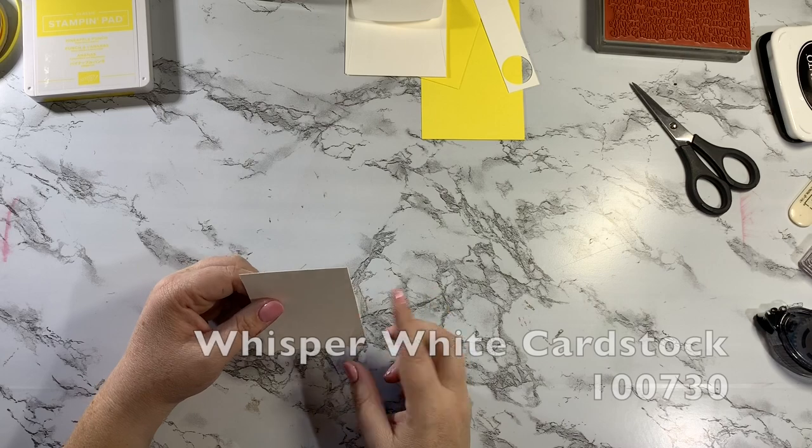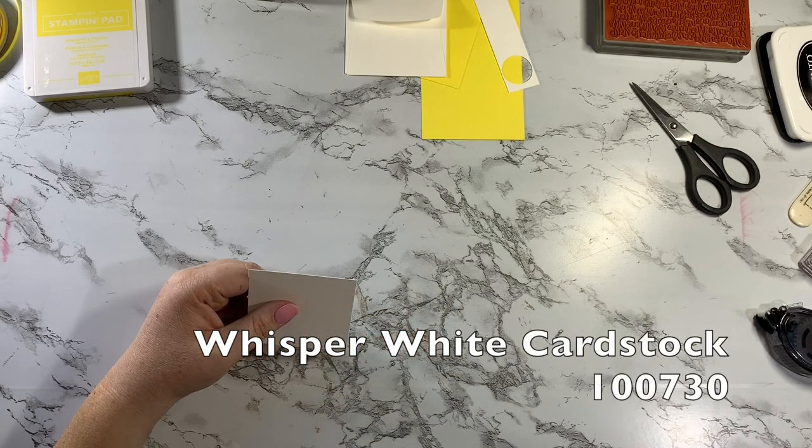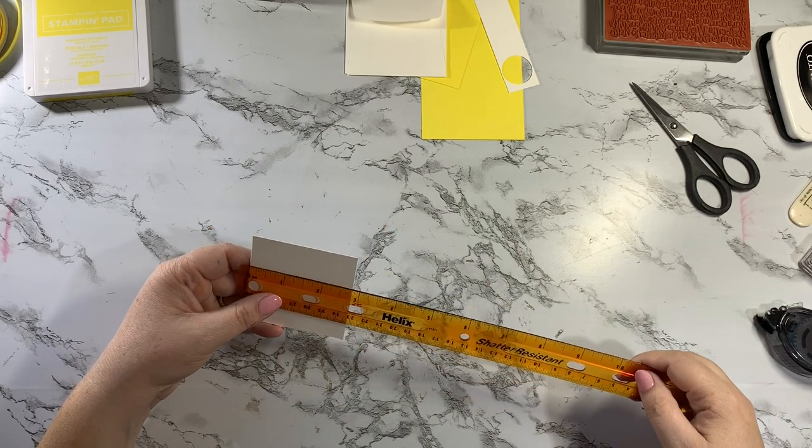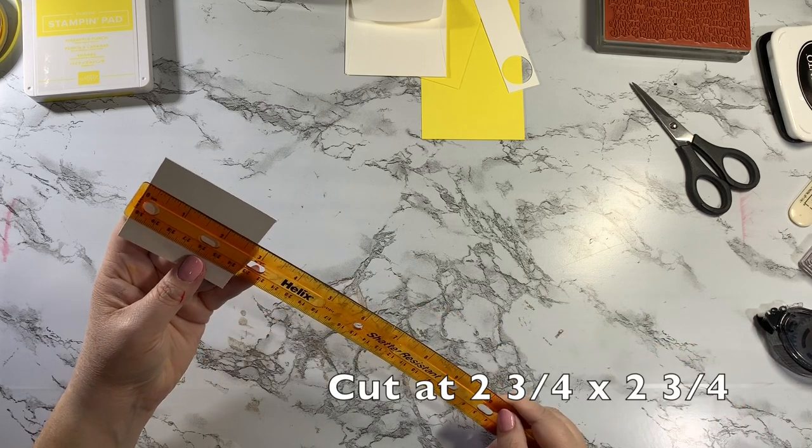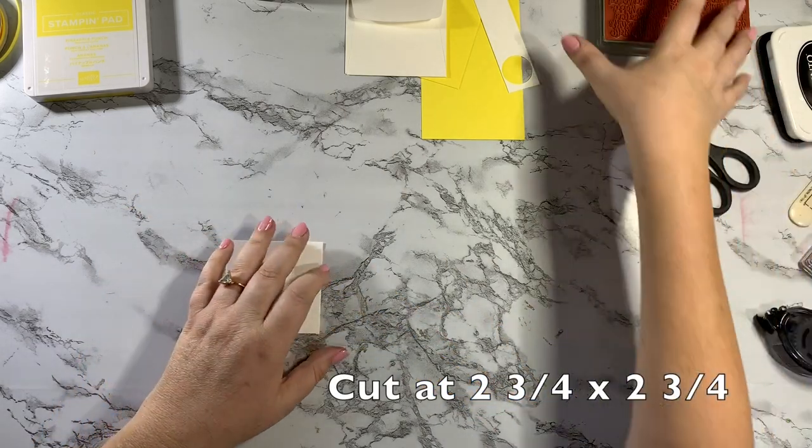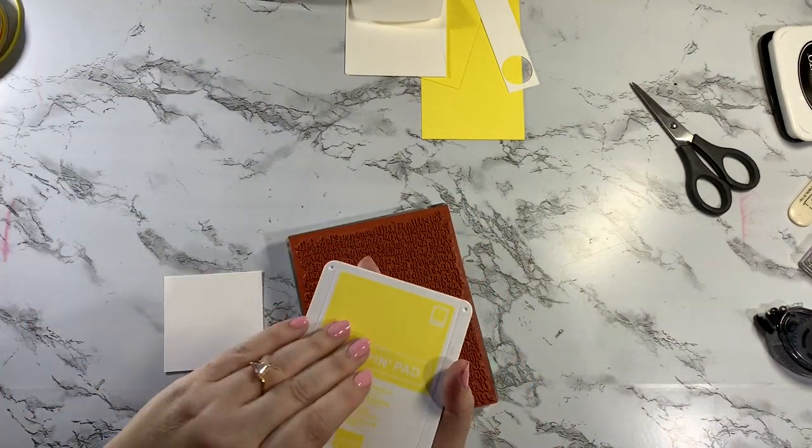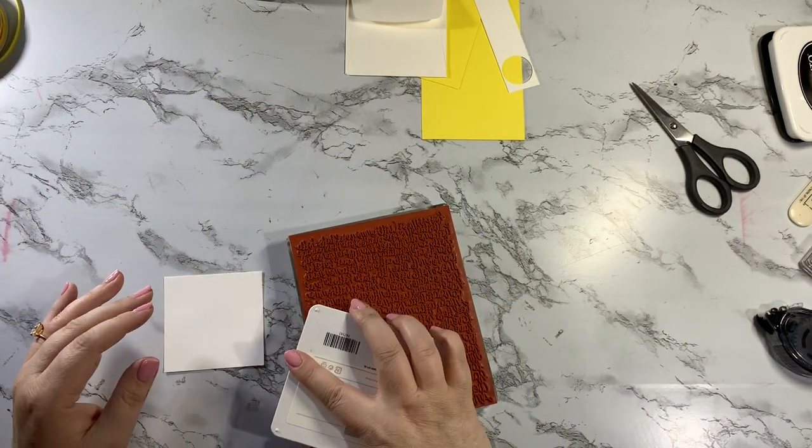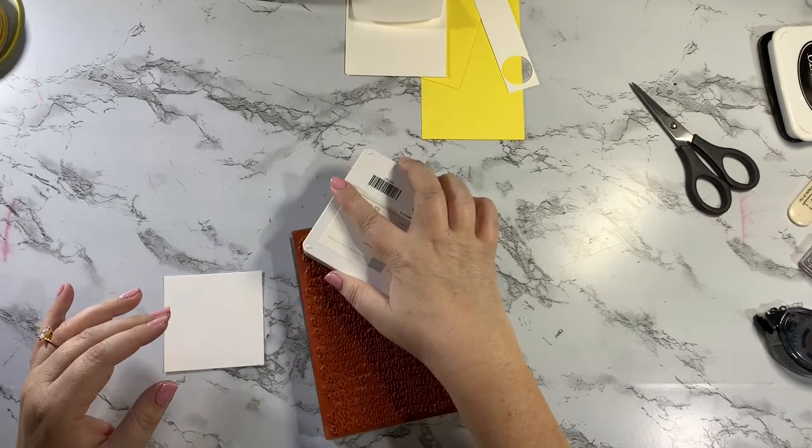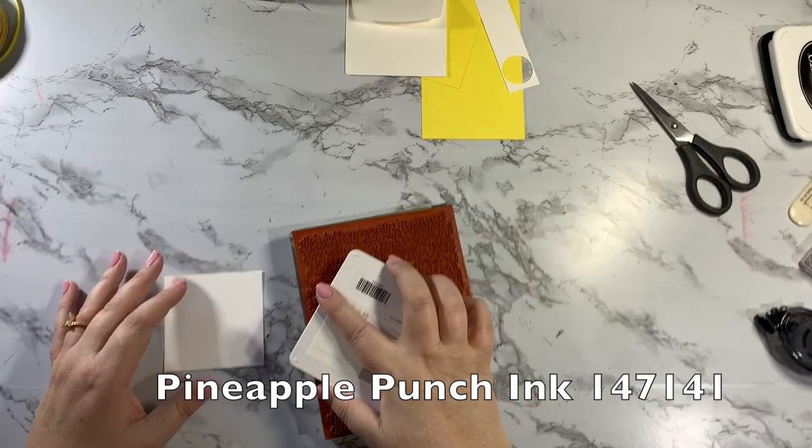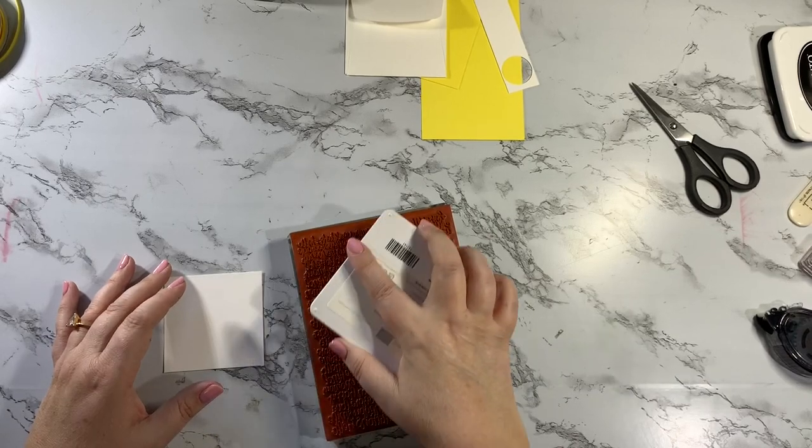So I have a piece of whisper white cardstock and this measures two and three-quarters by two and three-quarters, and I have my handwritten background stamp here. I'm going to go ahead and ink that up in pineapple punch ink. I love this color. I don't even need this much ink but I'm just going to ink up the whole thing.